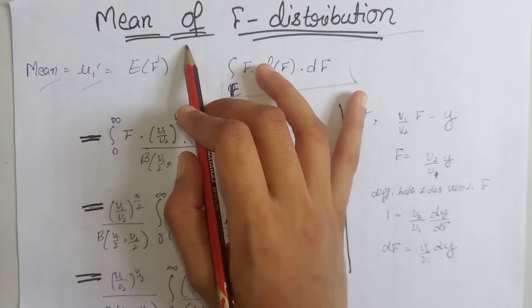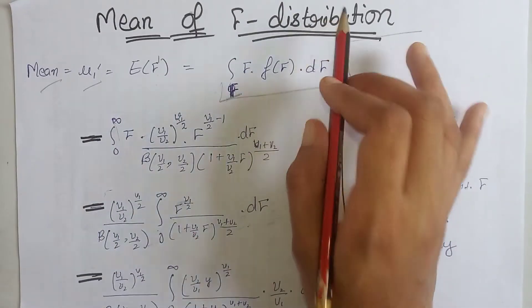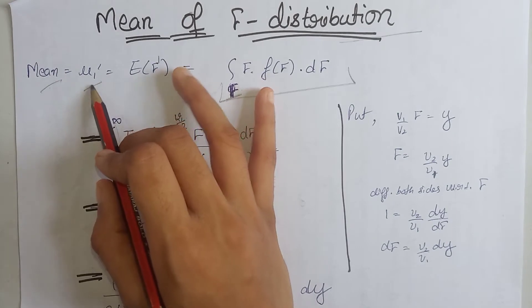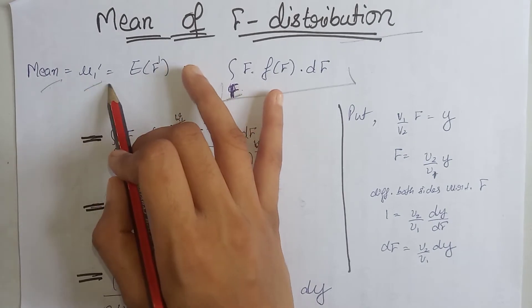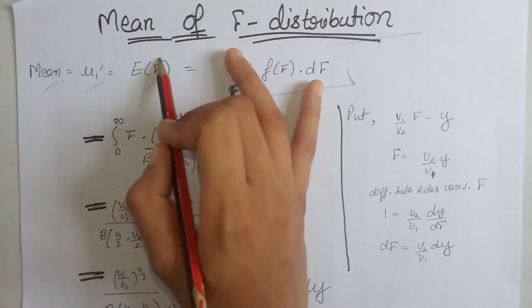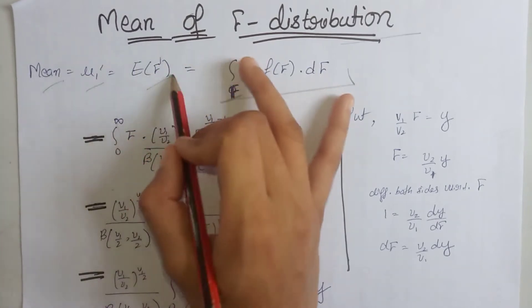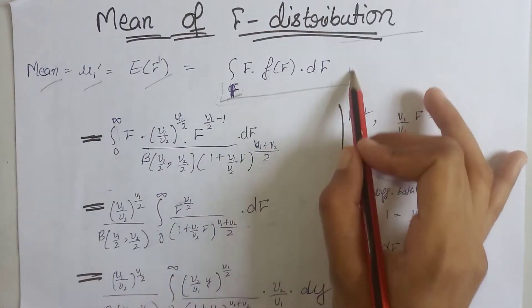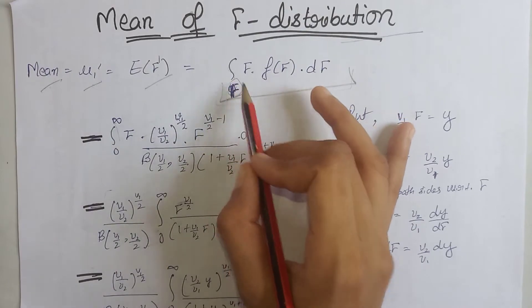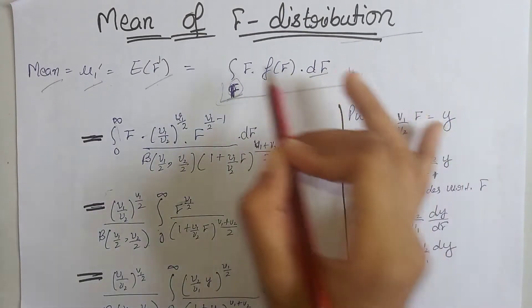Now we will calculate the mean of the F-distribution. We know that the mean is equal to the first moment about origin, that is mu₁ dash, which equals the expectation of F raised to power 1. According to the definition of expectation, we write the integration over all values of F with respect to dF.